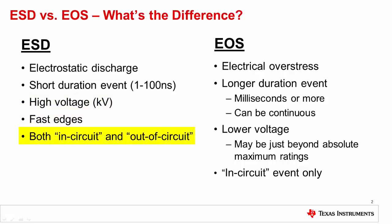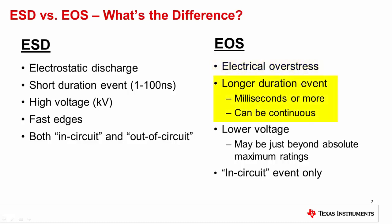ESD damage can occur in-circuit and or out-of-circuit. EOS, or electrical overstress, happens when a voltage is applied that exceeds the absolute maximum rating of the device. Compared to ESD events, an EOS event can have a much longer duration — it may be milliseconds, seconds, or even a continuously applied overstress voltage — and the voltage level is typically lower than that of an ESD event. In fact, it may be just over the absolute maximum rating of the device. For example, applying 10 volts to a device with an absolute maximum rating of 7 volts will cause EOS damage.